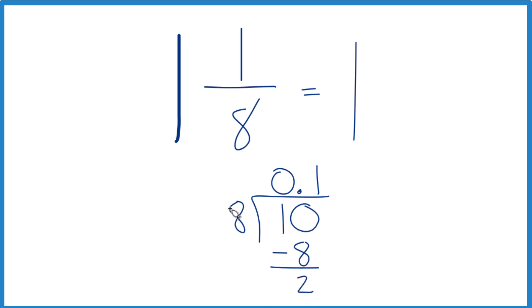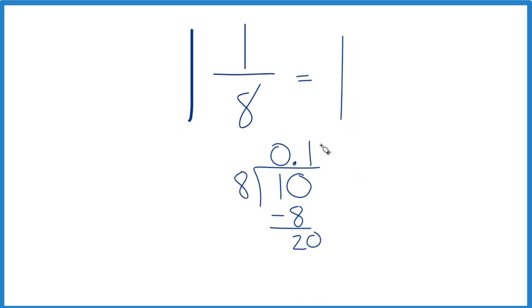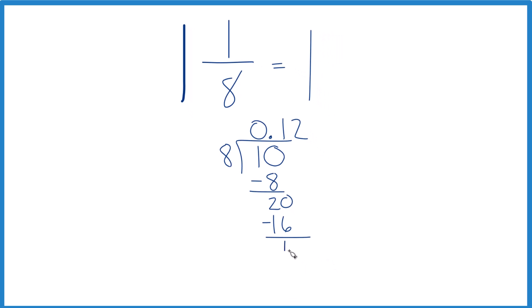So 10 minus 8 is 2. It doesn't go into 2. We could call this 20 if we moved over 1. 2 times 8 is 16. Subtract, we get 4.